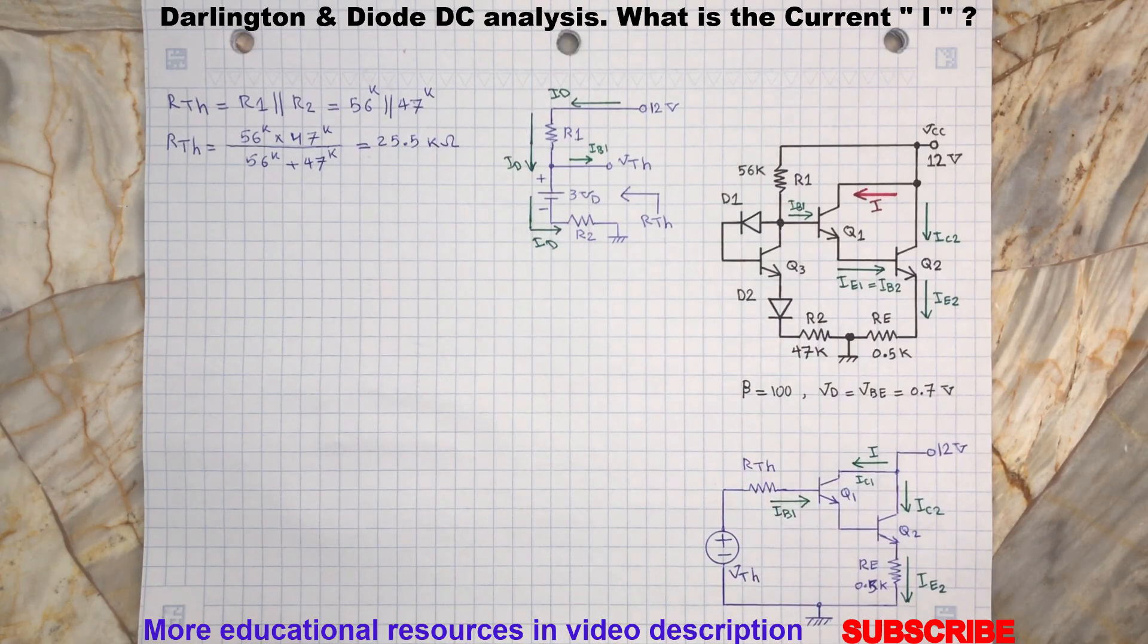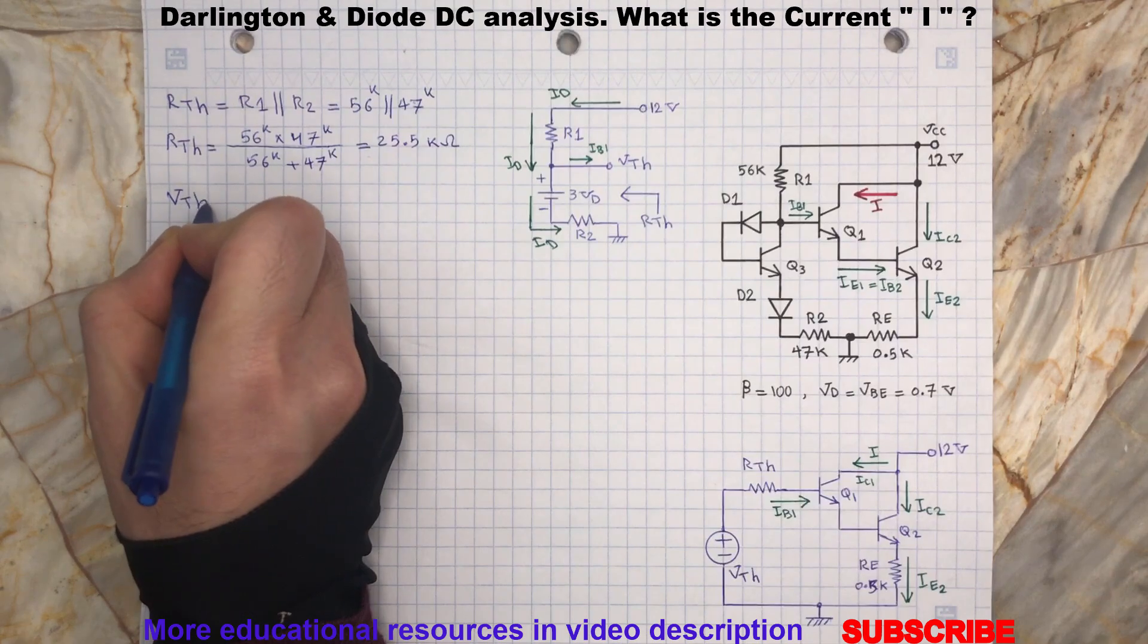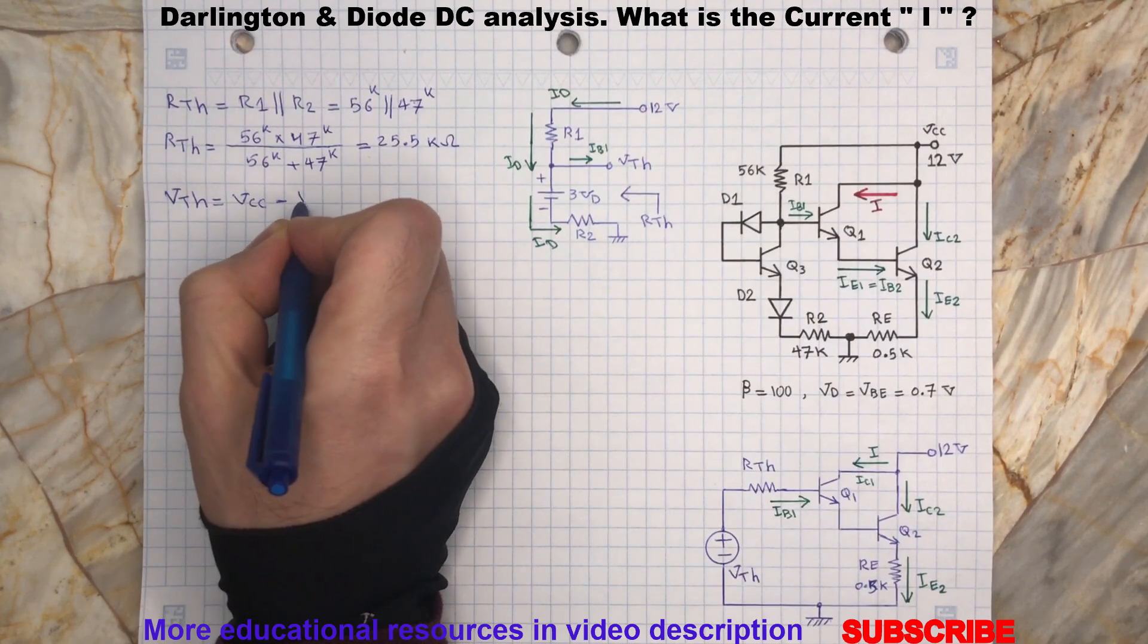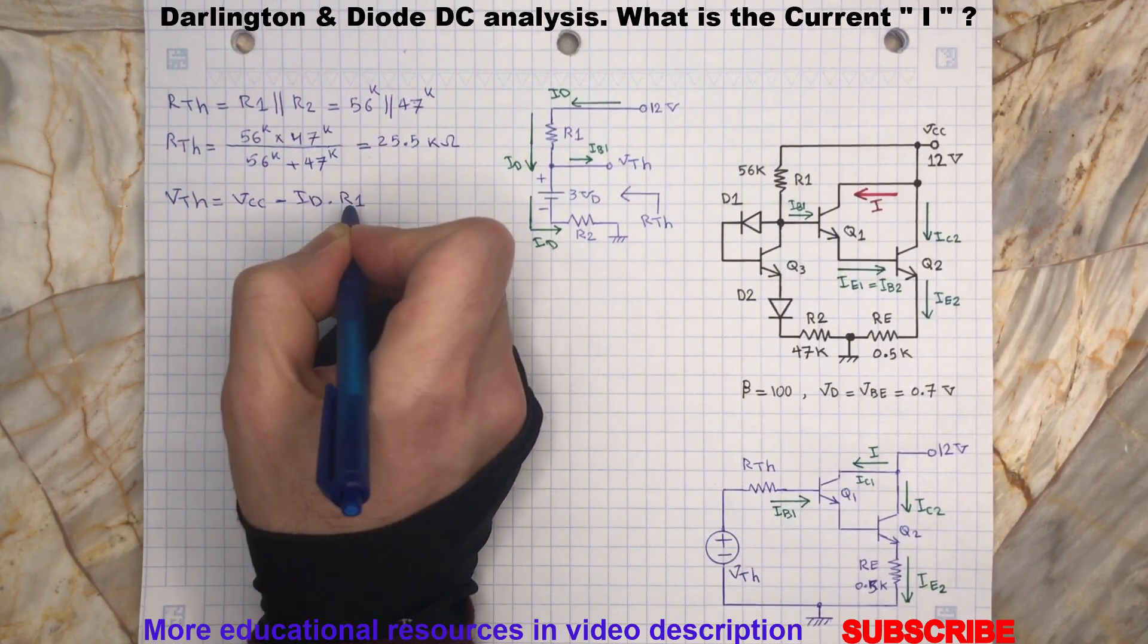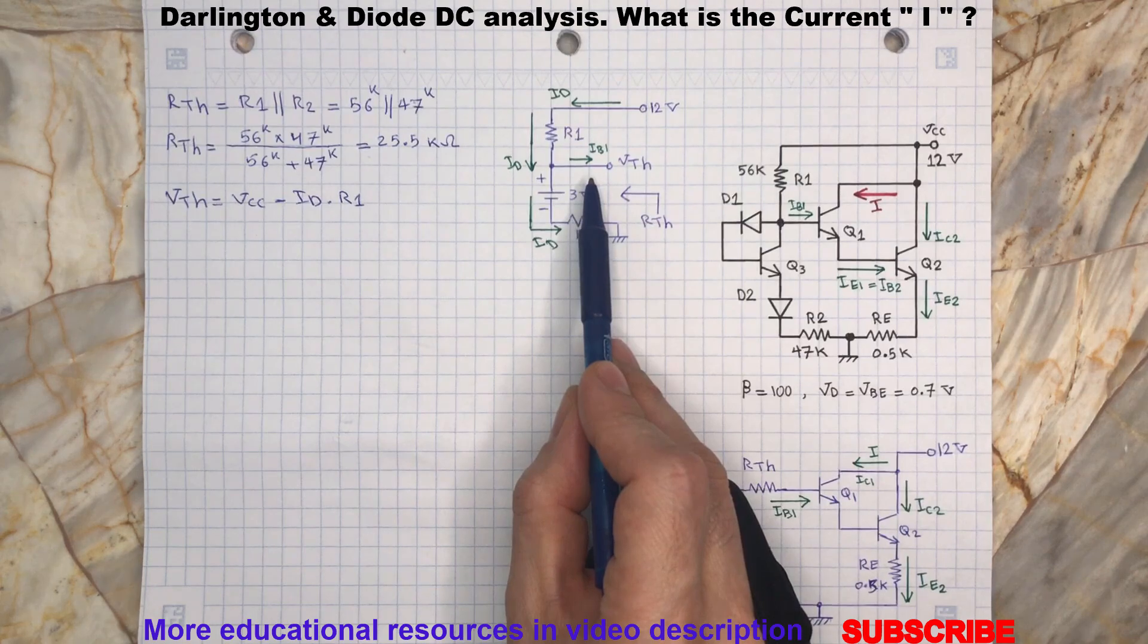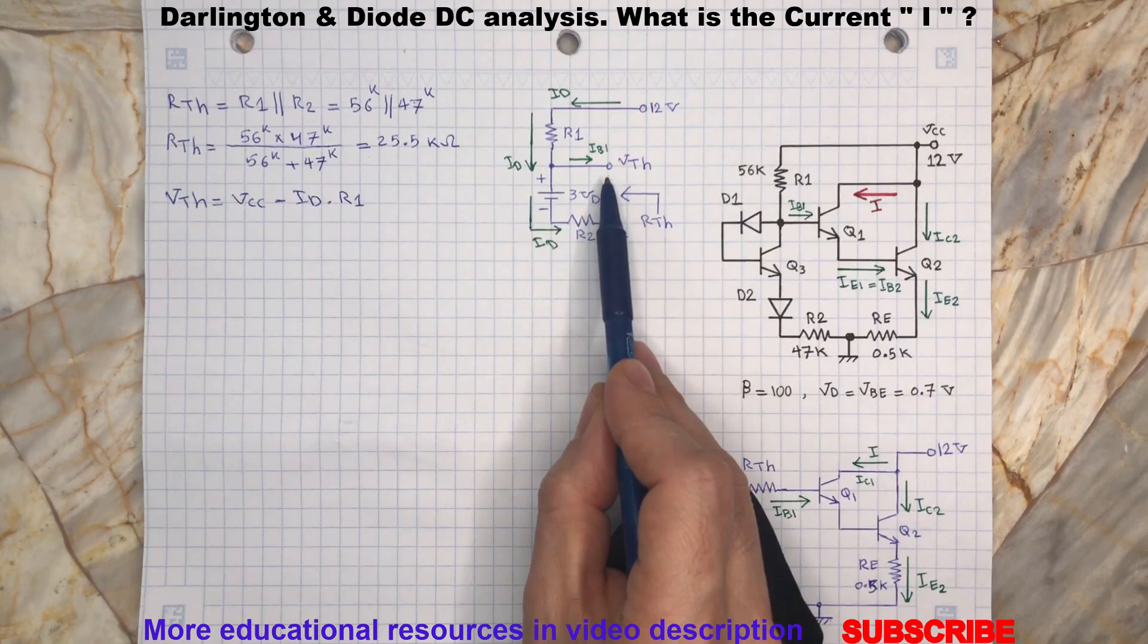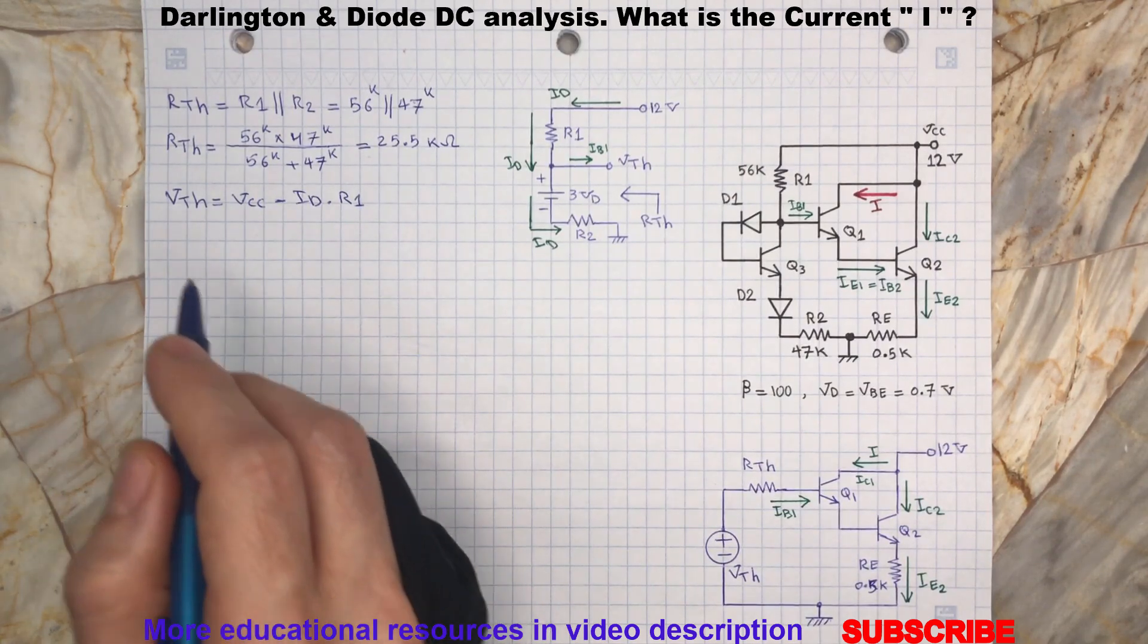Now, with knowing the current, we can simply calculate the Vth as follows. Since the base of transistor Q1 is disconnected in order to find the Thevenin equivalent, there won't be any IB flowing through the base of transistor Q1. Id can be determined by the following calculation.